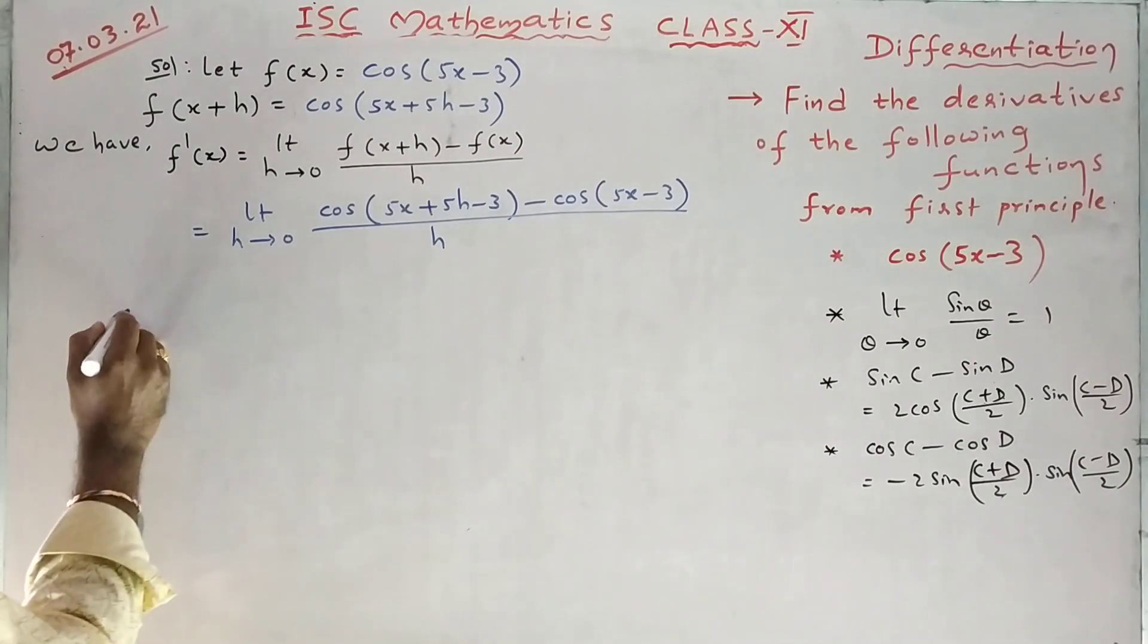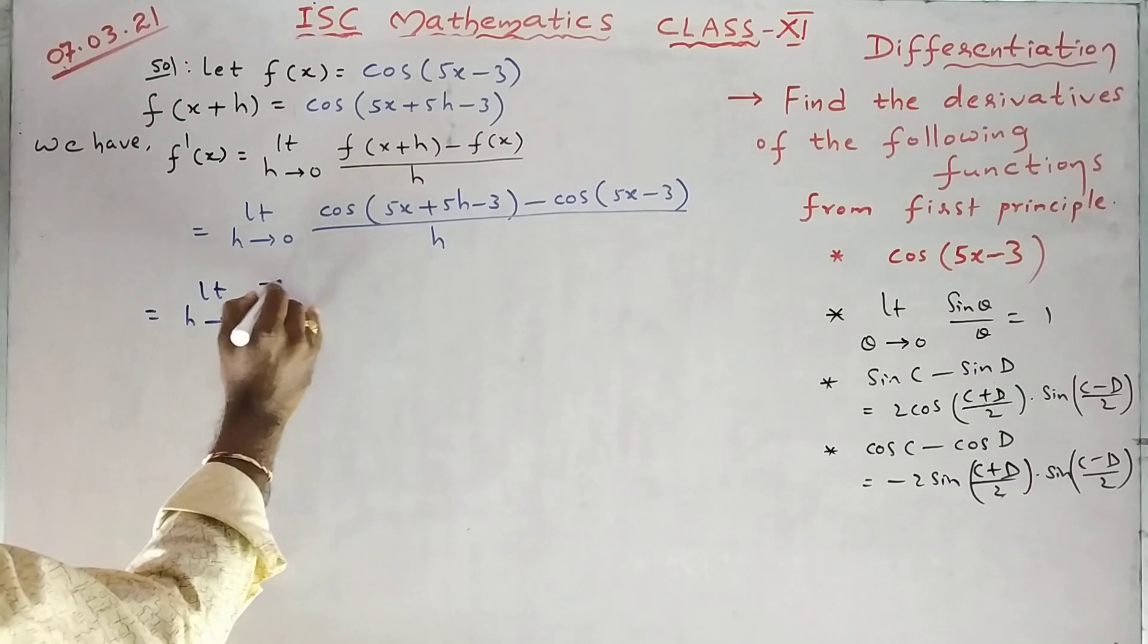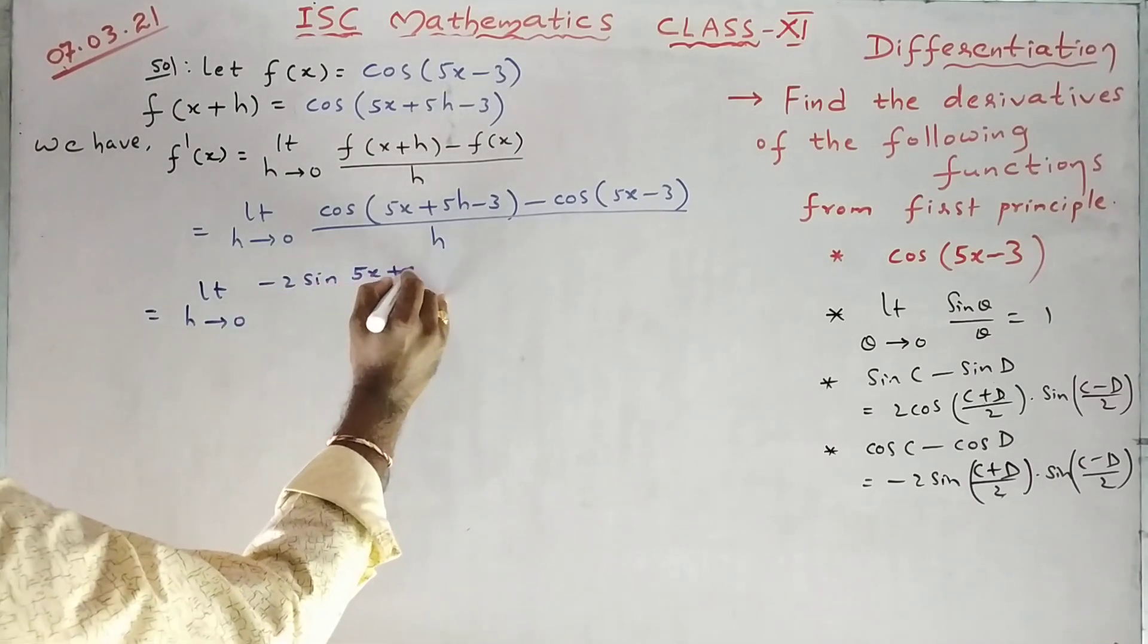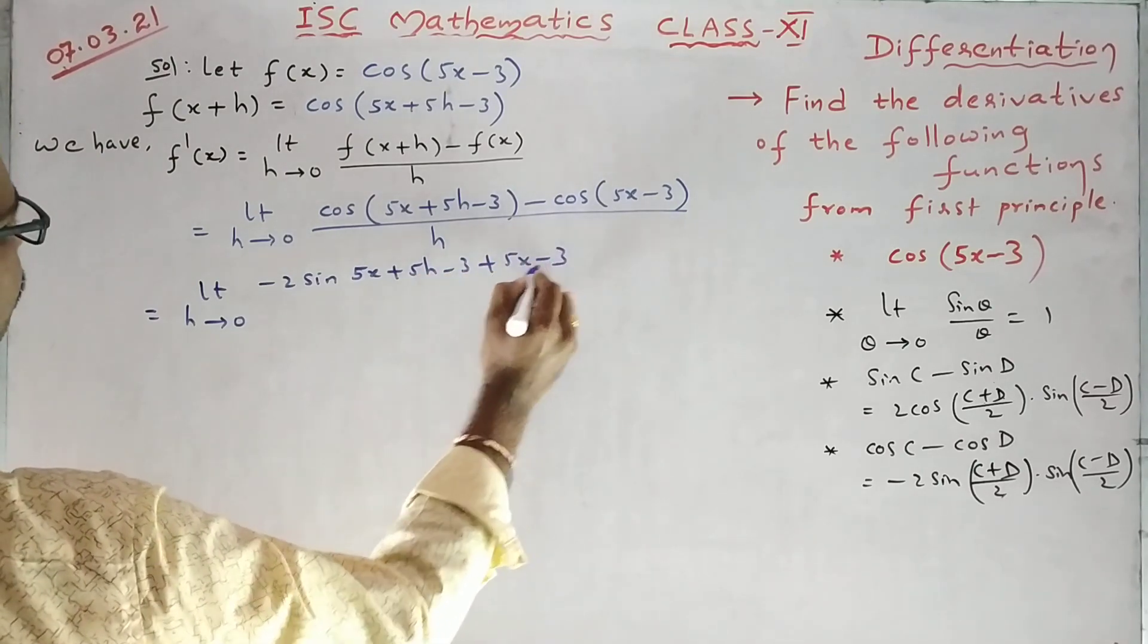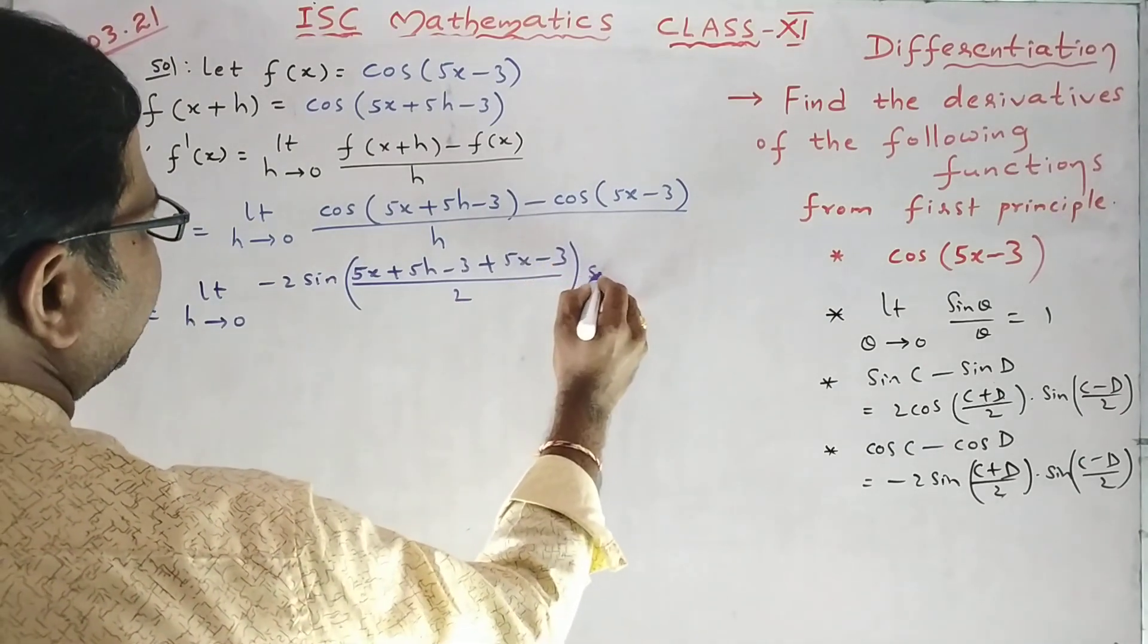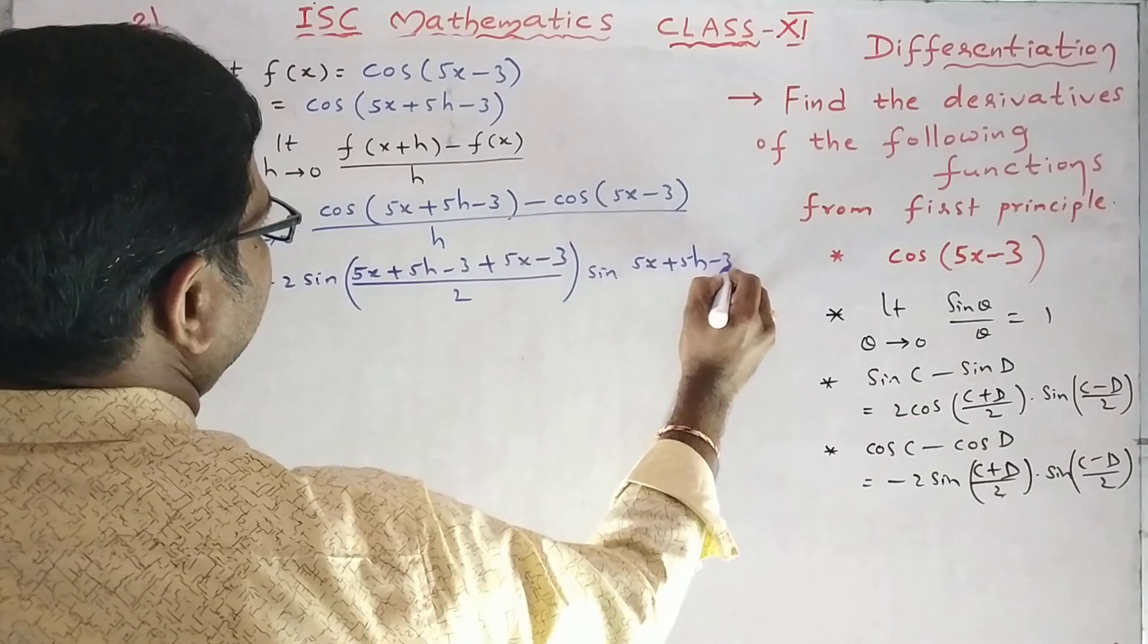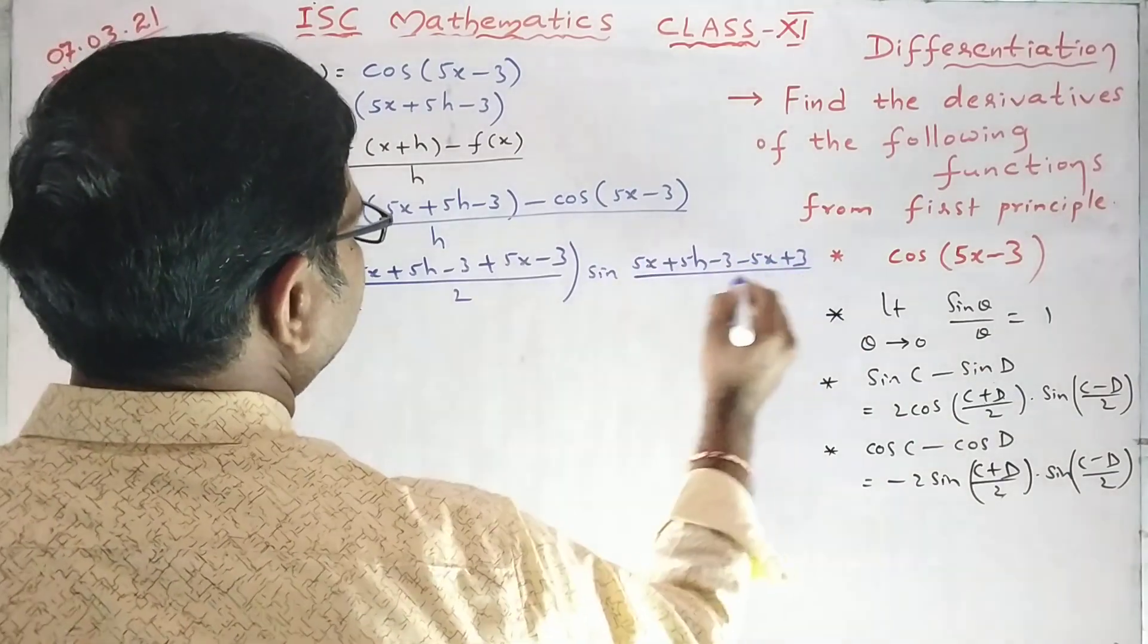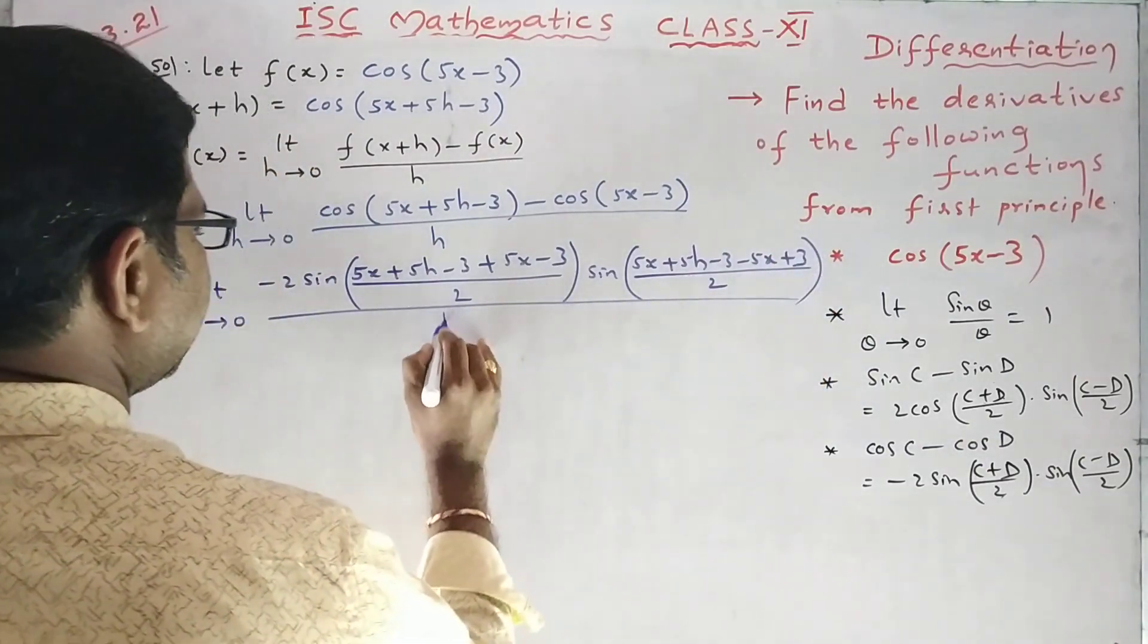C minus cos d formula. So we can write limit h tending to 0 minus 2 sin c plus d by 2 into sin c minus d by 2 upon h.